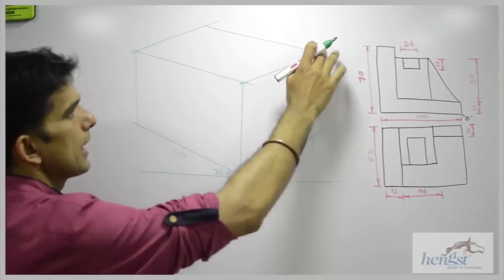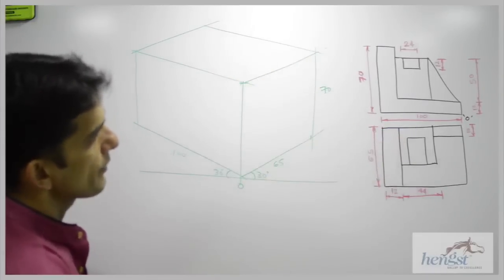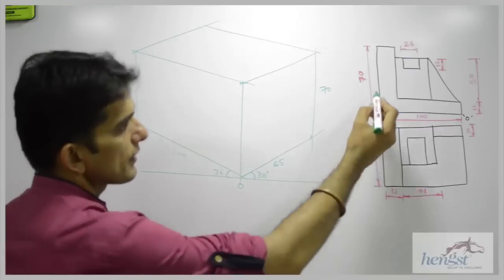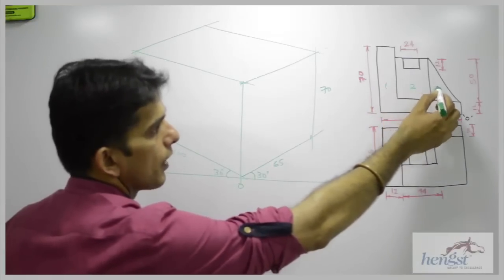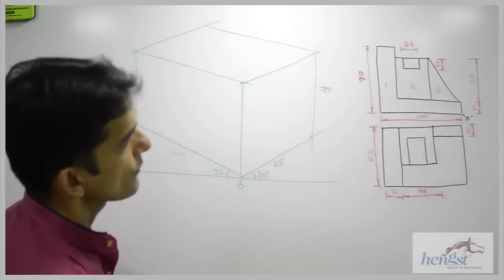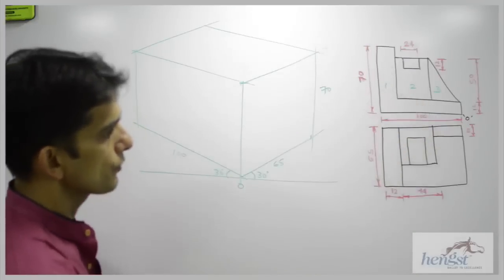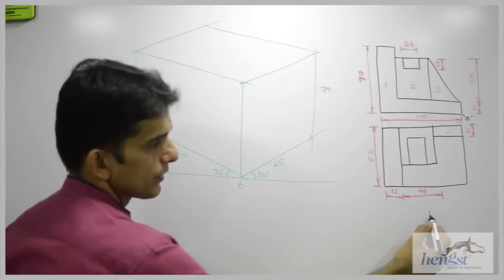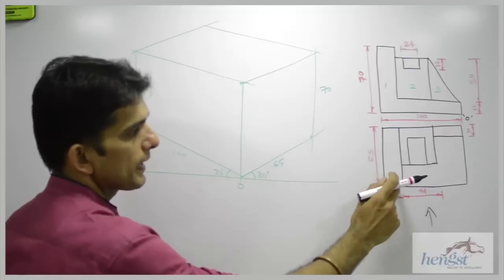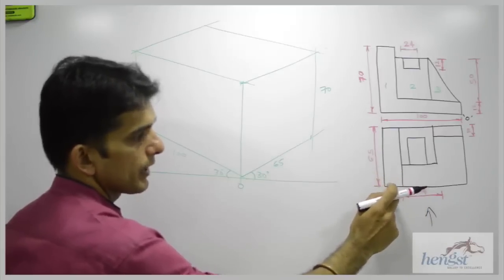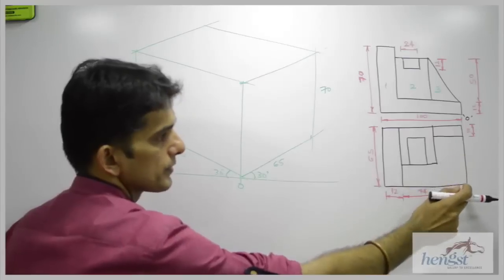First we will draw a box and after that we will see the front view. In the front view there are 3 parts: part 1, part 2, and part 3. Out of these, which one is nearer to you? The observer is over here, so when the observer sees from here, part 1 is nearer to him.